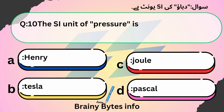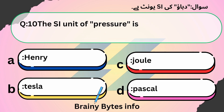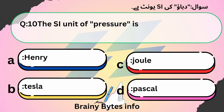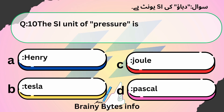The SI unit of pressure is: A. Henry, B. Tesla, C. Joule, D. Pascal. Answer: D. Pascal.